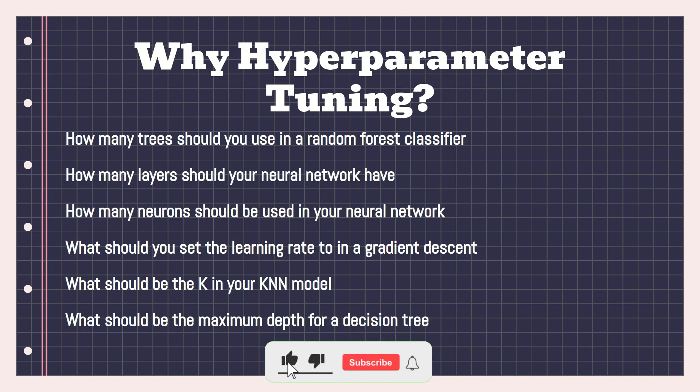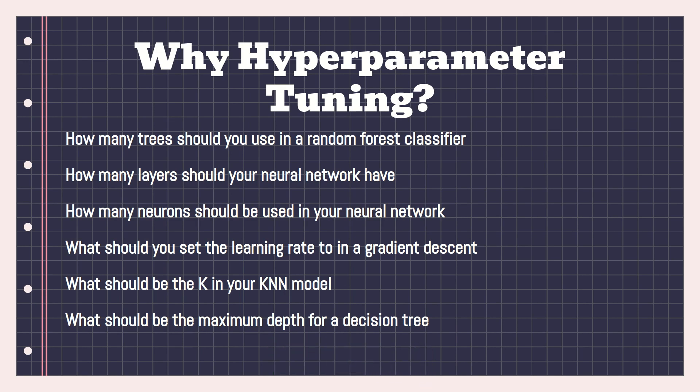Hyperparameter tuning can help us decide how many trees to use in our random forest, how many layers to use in a neural network, how many neurons should be in each layer, what the learning rate of gradient descent should be, what the decay in K-nearest neighbors should be, and what the maximum depth of a decision tree should be — among many other things.